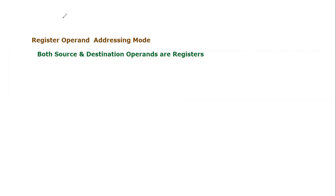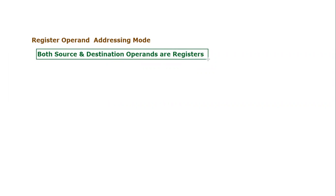In this addressing mode, the key thing is that both the source operand and destination operands are registers. So it is very easy to predict — if we are given an instruction, we need to consider whether the source operand or destination operand are registers or not. If they are registers, there is no doubt that the specific instruction is using register operand addressing mode.